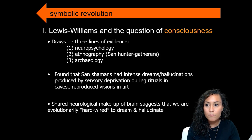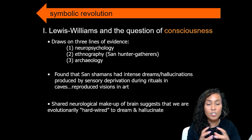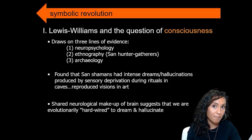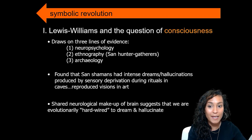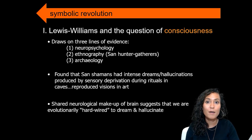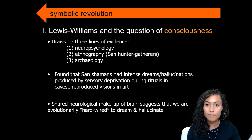Lewis-Williams' argument is based on the understanding that we have a shared neurological makeup across contemporary society as well as deep into the past, allowing us to make comparisons between the modern brain and the Paleolithic brain. These neurological similarities allow us to take ethnographic examples from the San living in Africa today and apply them to people living hundreds of thousands of years ago in Europe.